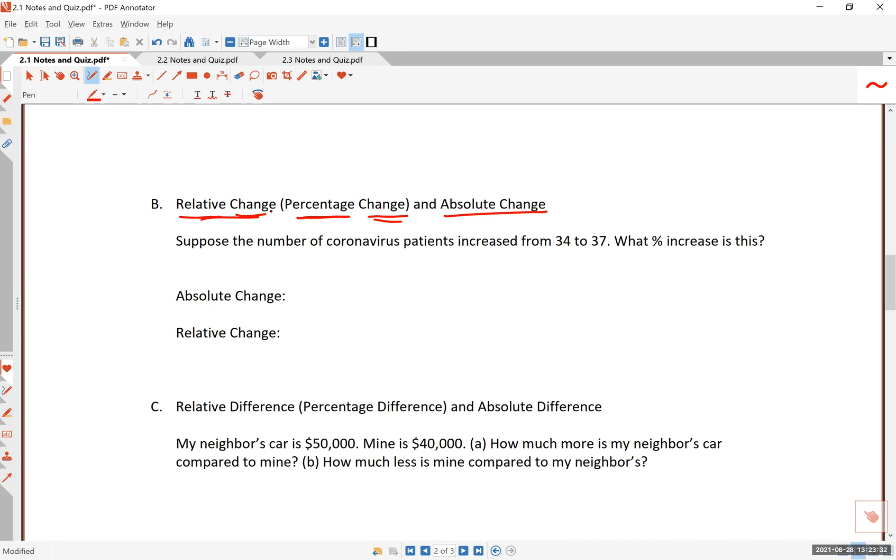Suppose that the number of coronavirus patients increased from 34 to 37 in one local hospital. What percent increase is this? The absolute change has to do with a numerical difference. The numerical difference is a fancy term for saying what's the difference, what's the result of subtraction. So 37 minus 34, clearly three more patients were found with the coronavirus.